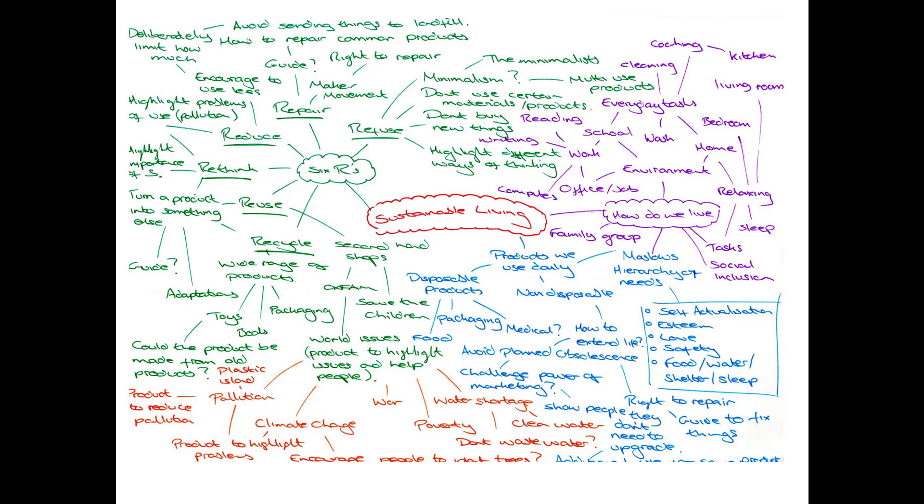To start the mind map, write the topic in the middle of the page and add your thoughts around the edge. When adding thoughts, try to differentiate between them by writing in different colors, though they may overlap in places, so don't worry too much about that.